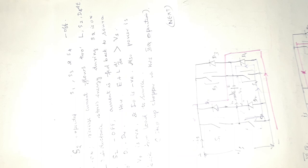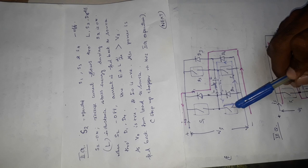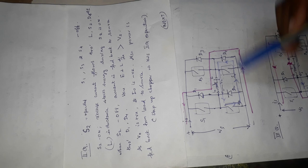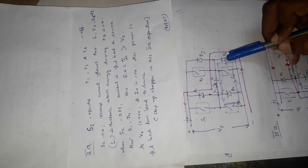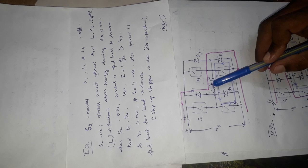In second quadrant operation, the chopper S2 is operated. The other choppers S1, S3 and S4 are in off condition. When S2 is on, a reverse current flows through L, S2, D4, and E and L. The inductance L stores energy during S2 is on.